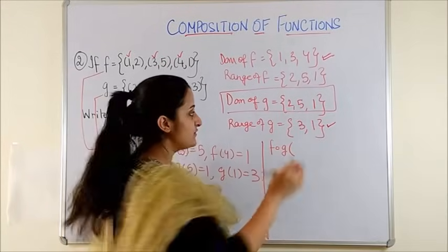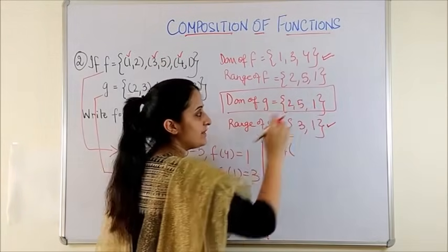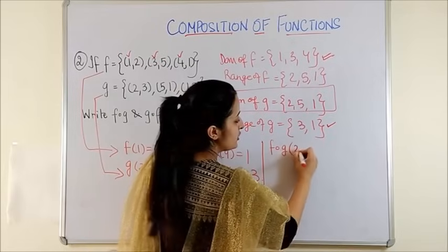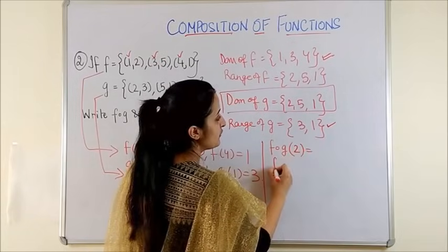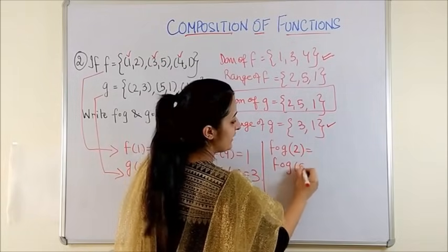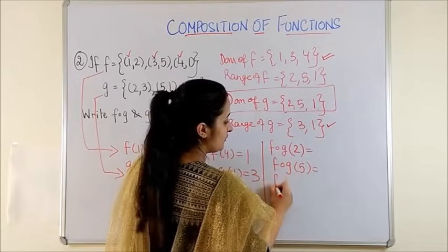In order to begin with F of G, we start with whatever elements are there in domain of G. So we need to find F of G of 2, F of G of 5 and F of G of 1.